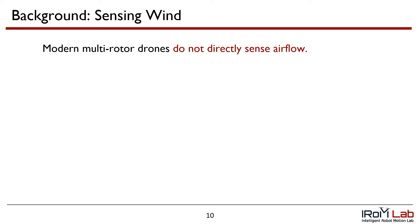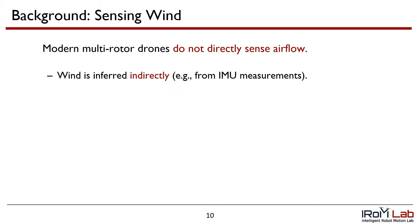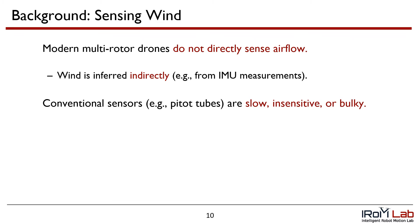As background, modern multi-rotor drones do not directly sense airflow. Instead, the presence of wind is inferred indirectly, for example using IMU measurements. Conventional sensors, such as pitot tubes, are too slow, insensitive, or bulky to be suitable as an onboard omnidirectional flow sensor.